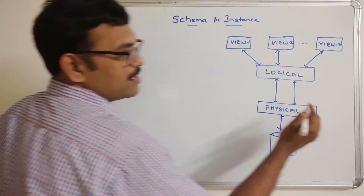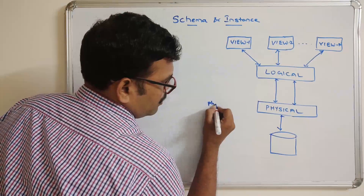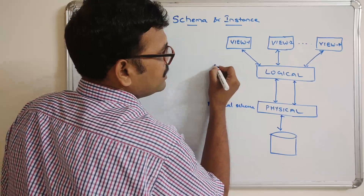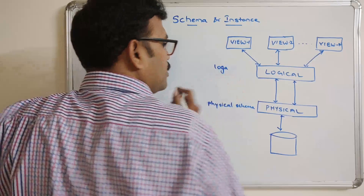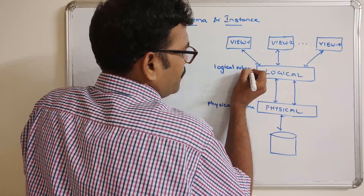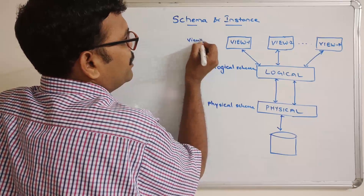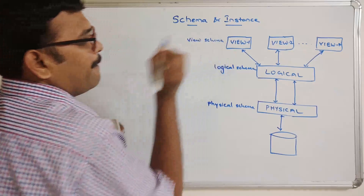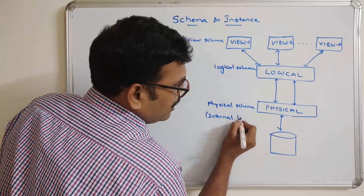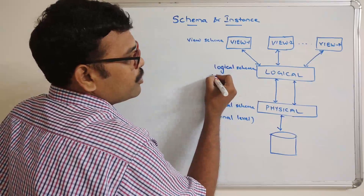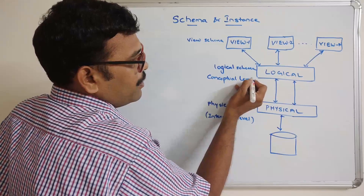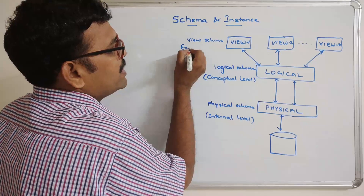This is called the physical schema or physical level. This is the logical schema or logical level. And this is the view schema. The physical schema is also known as the internal level. The logical schema is also called the conceptual level. And the view schema is also called the external level.